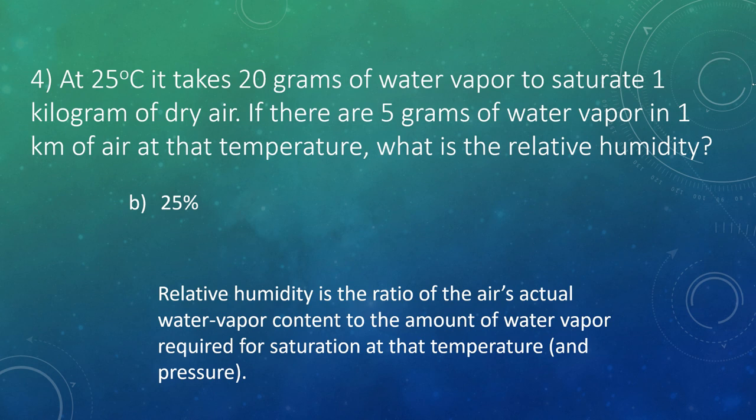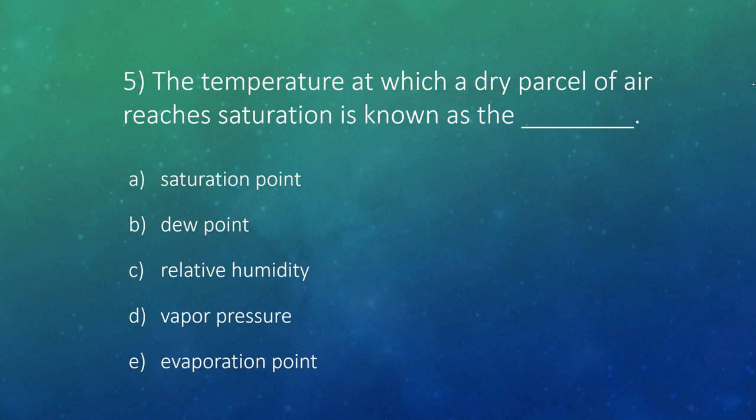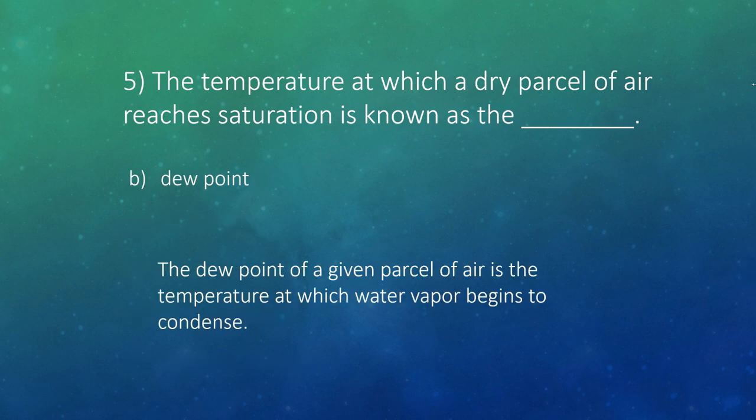Question five: the temperature at which a dry parcel of air reaches saturation is known as what? The answer is the dew point temperature. The dew point of a given parcel of air is the temperature at which water vapor begins to condense.